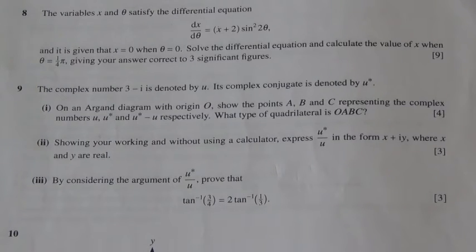Hi. Question number 9, taken from October 2015, Advanced Level Maths HSE P3. The complex number 3 minus i is denoted by u. Its complex conjugate is denoted by u star.